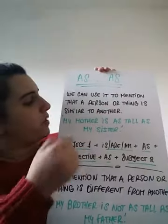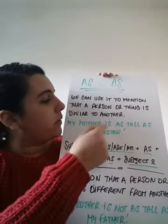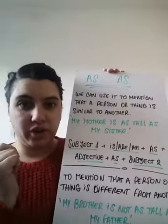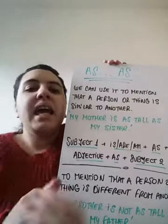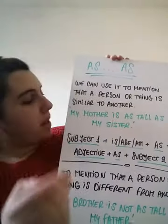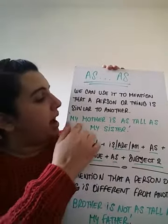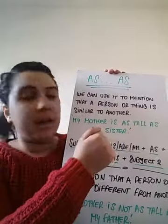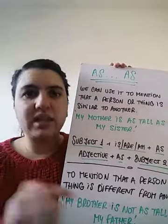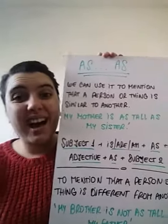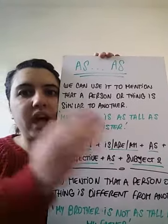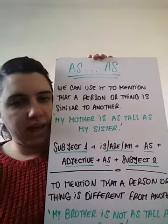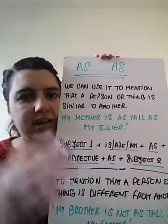For example: my mother is as tall as my sister. Esto sería: mi mamá es tan alta como mi hermana. El 'as...as' lo podemos interpretar como 'tan' y 'como' — tan alta como.